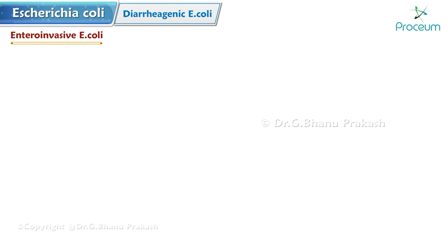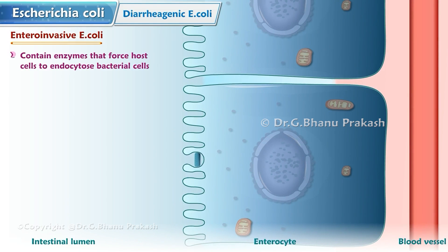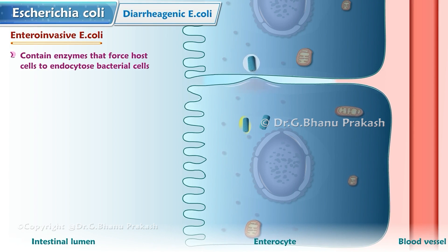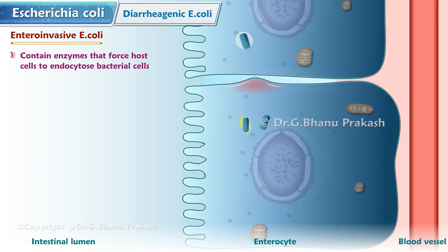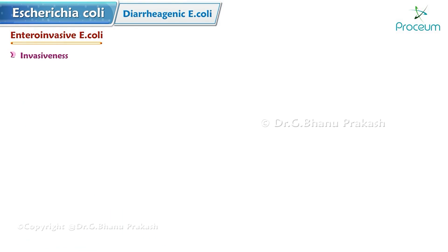Enteroinvasive E. coli (EIEC) is an atypical E. coli — non-motile, non-lactose fermenting, and anaerogenic. It invades the large intestine using enzymes that force host cells to endocytose the bacteria. Once inside, EIEC lyses its phagosome and begins replication in the cytoplasm. The bacteria continue to invade nearby cells, resulting in lateral spread and destruction of cells, leading to necrosis and inflammation.